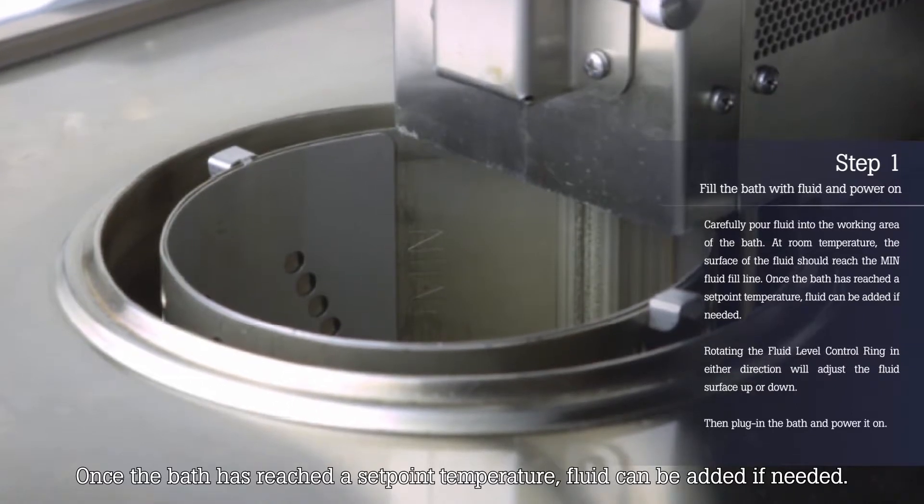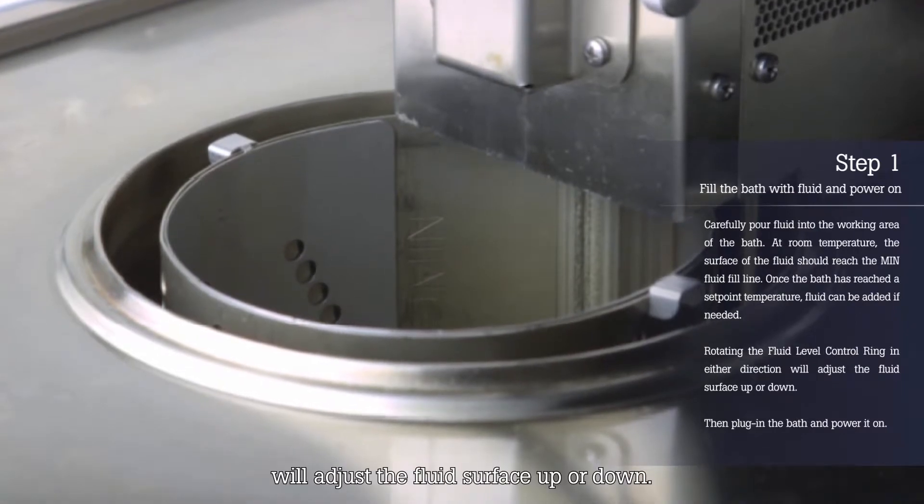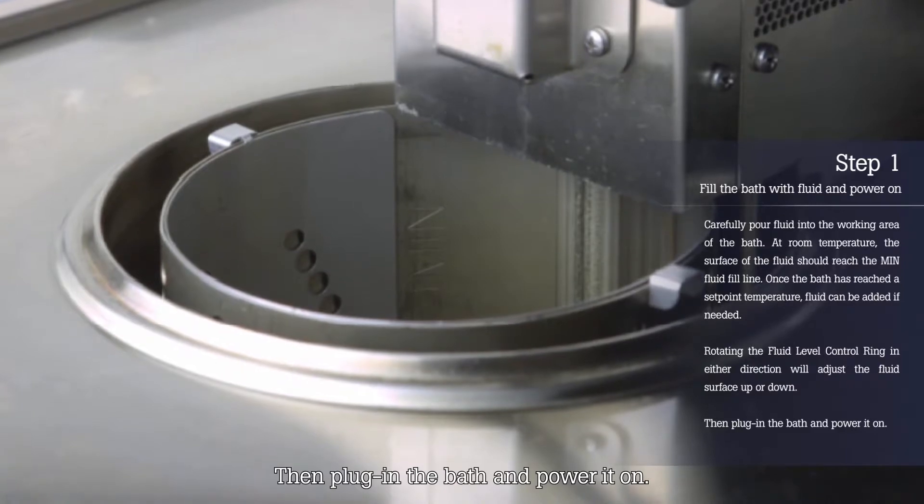Rotating the fluid level control ring in either direction will adjust the fluid surface up or down. Then plug in the bath and power it on.